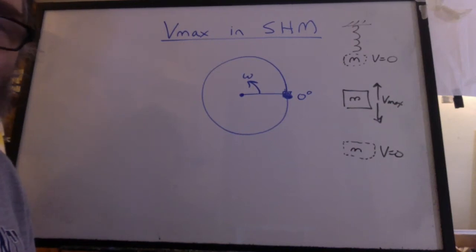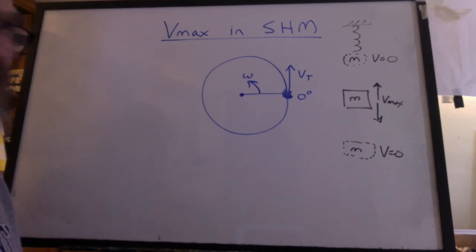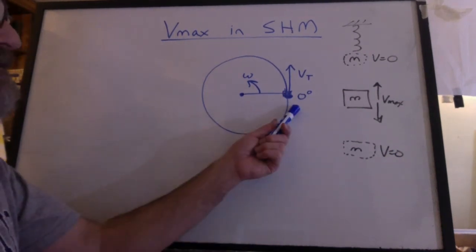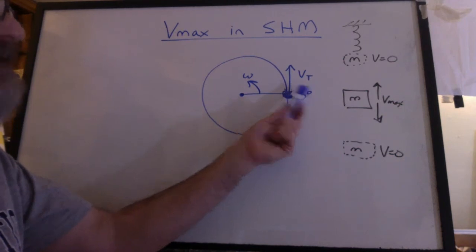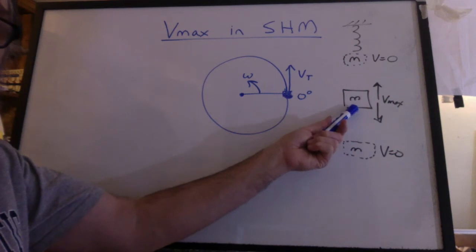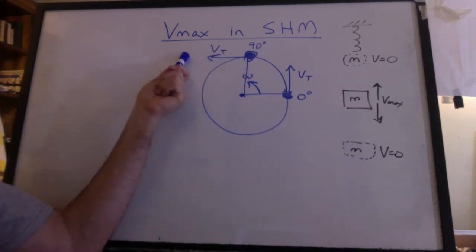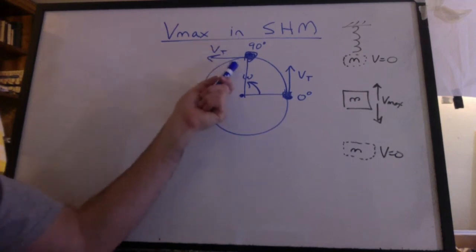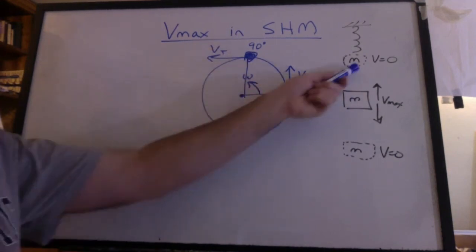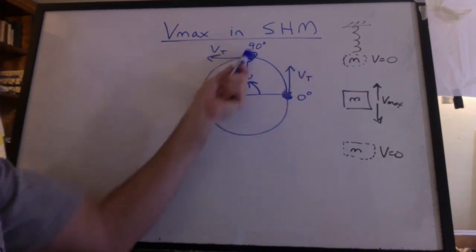Let's analyze the y component of circular motion to see what's going on. There's a tangential velocity in the circular motion. At the equilibrium position, this tangential velocity is equal to the velocity maximum, because this is at the equilibrium position as well. When we're at 90 degrees, the tangential velocity is horizontal. It has no y component. The y component is zero. That agrees with the velocity being zero at the top. It can't go up any further.